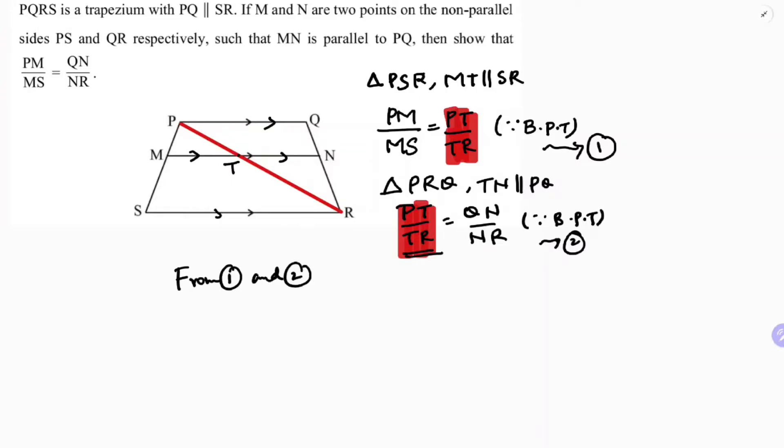See, PT/TR is common. So we can write PM/MS equals QN/NR. This is what we need to prove.